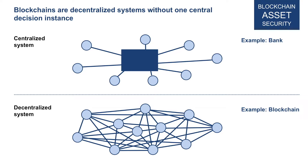I'd like to start by contrasting centralized systems with decentralized systems like blockchains. A centralized system is one where every participant is linked by some kind of central instance — an example would be a bank. You can open a bank account, facilitate transactions through the bank, and the bank sits in the middle of everything, deciding whether a transaction is valid. If there's a dispute, the bank investigates and makes a resolution.